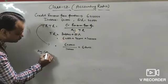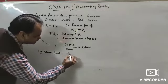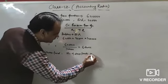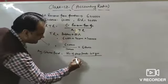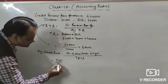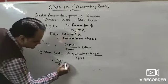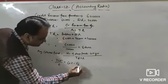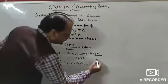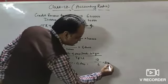Now for average collection period: the formula is number of days or months in a year divided by trade receivable turnover ratio. Number of days is 365 divided by 6 = 60.3, which rounds to 61 days. If using months, 12 divided by 6 = 2 months. This is how trade receivable turnover ratio and collection period calculation is done.